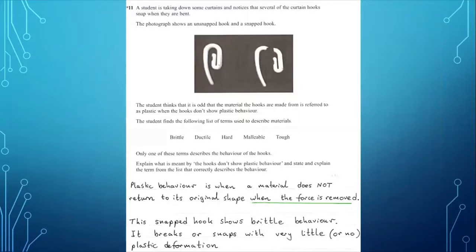This exam question was only, I think, for a few marks, but look at it. We've got snapped and an unsnapped curtain hook. And the student thinks it's odd that the material the hooks are made from is referred to as plastic when the hooks don't show plastic behaviour. Aha. The student finds the following list of terms used to describe the materials. Brittle, ductile, hard, malleable and tough. How are we going to answer this?